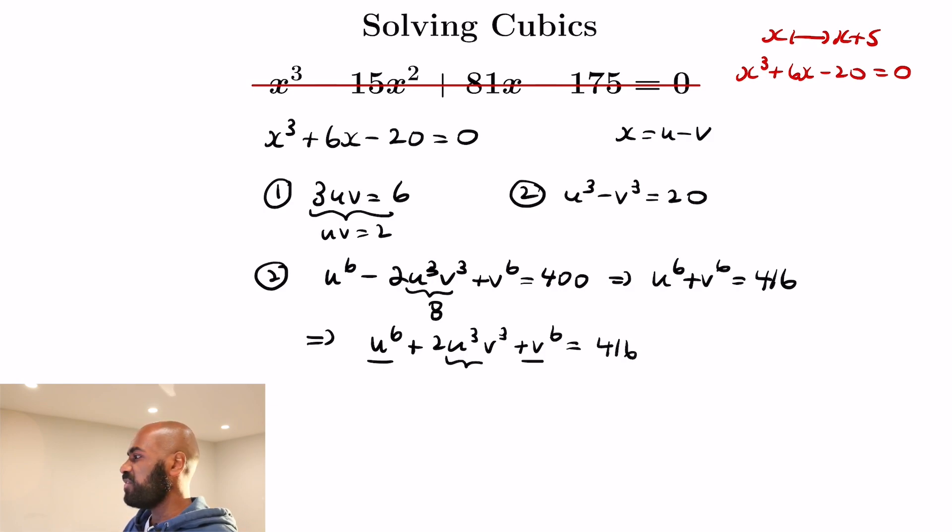So u to the 6 plus v to the 6 is 416 that we figured out, and now we add in a 16 for the u cubed v cubed contribution to give us 432. 432 is 144 times 3.